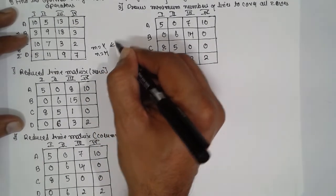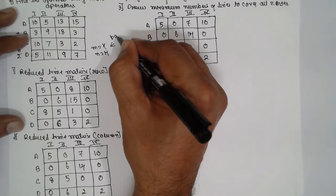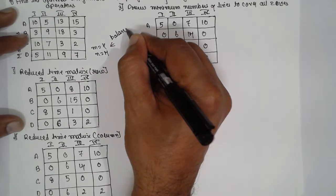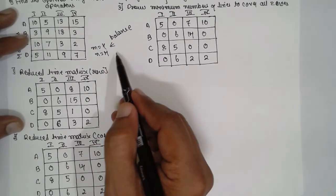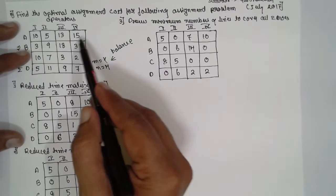The smallest is 1 here. 8 minus 1 is 7, 14, 0, and 2. Again this will remain as it is, because the smallest is 0 here.